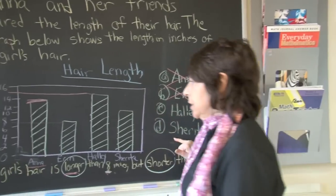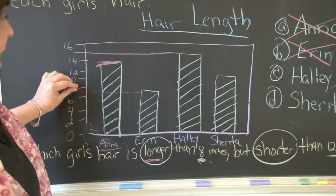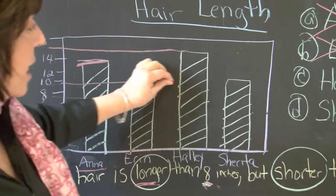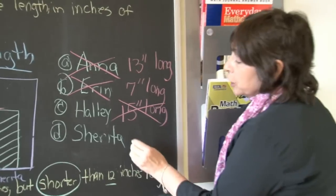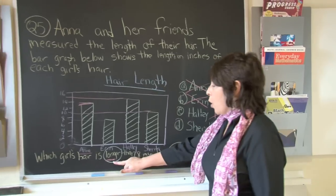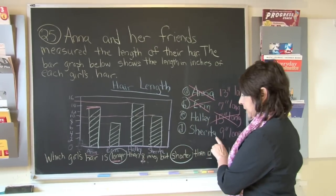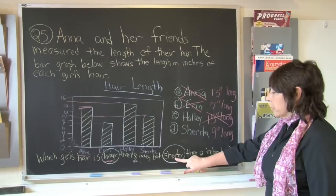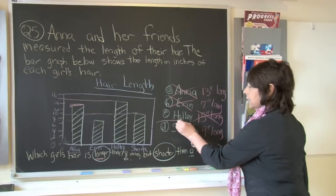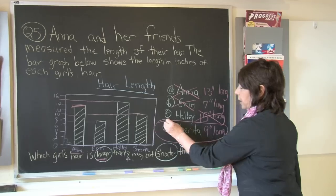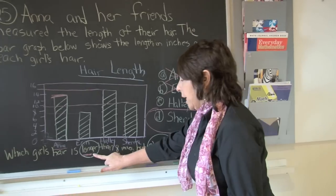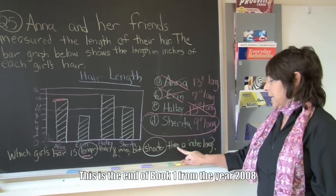Now we know that Charita has to be the answer, but let's take a good look. Charita's hair is between eight and ten — what comes between eight and ten? Nine. So Charita's hair is nine inches long. Is that longer than eight inches? Yes. Is it also shorter than twelve inches? Yes. So the correct answer is Charita at nine inches — it is greater than eight and shorter than twelve inches.